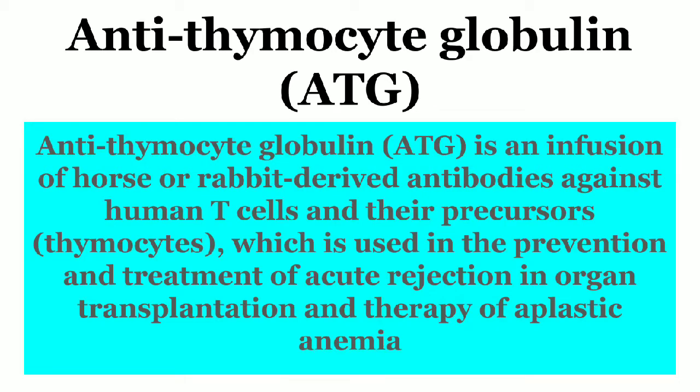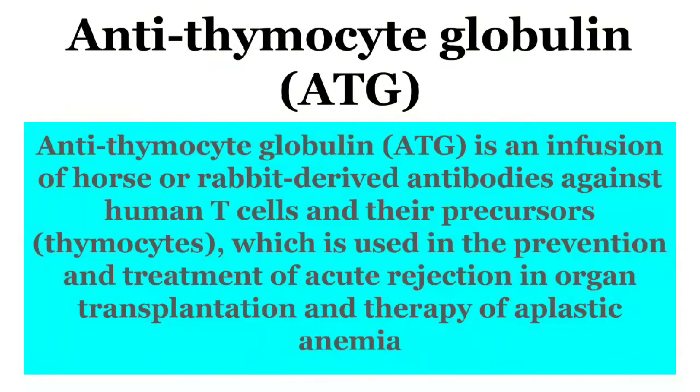Antithymocyte globulin, ATG, is an infusion of horse or rabbit derived antibodies against human T cells and their precursors, thymocytes, which is used in the prevention and treatment of acute rejection in organ transplantation and therapy of aplastic anemia.